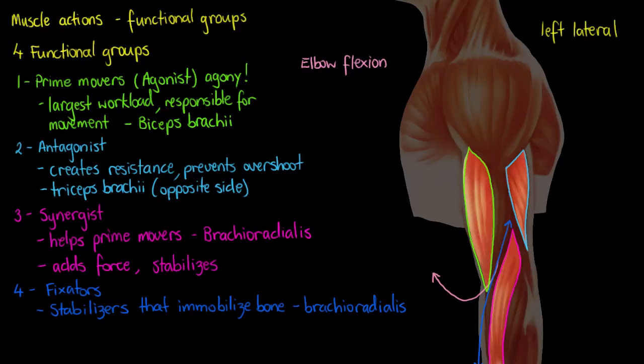We've now covered all four functional groups and the movements they allow, and we can apply these to any movement in the body. For example, if we think of flexion of our knee joint, the prime mover would be our hamstrings, since they are responsible for closing that angle and creating flexion. That would mean our antagonist would be our quadricep muscles. You can apply these four functional groups to any part of your body and any movement to identify each muscle's role.